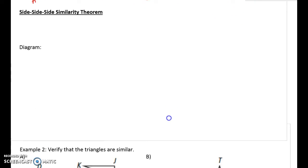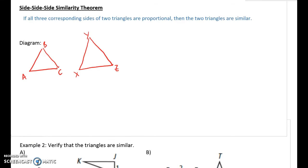Last one is side, side, side similarity. This one says, if all three corresponding sides of two triangles are proportional, then the two triangles are similar. You want to make sure all three are going to end up with your same ratio.